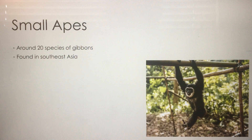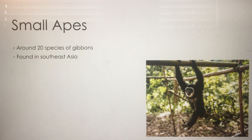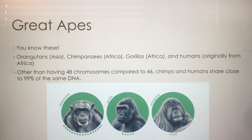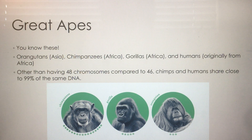Now the gibbons — these are the small apes. Not as many species as some of the monkey categories, but now we're getting a little bit closer to us in terms of genetic similarities.